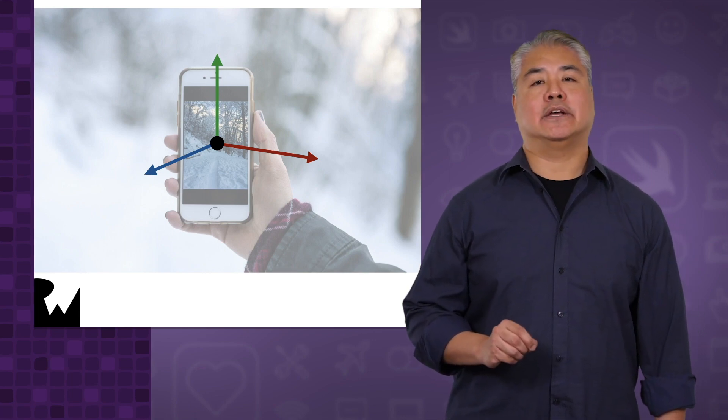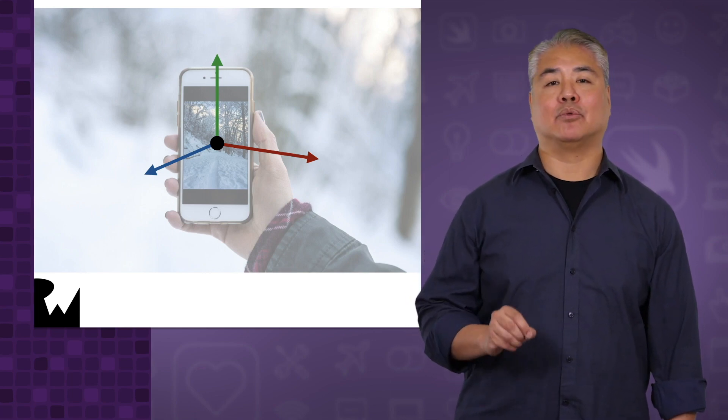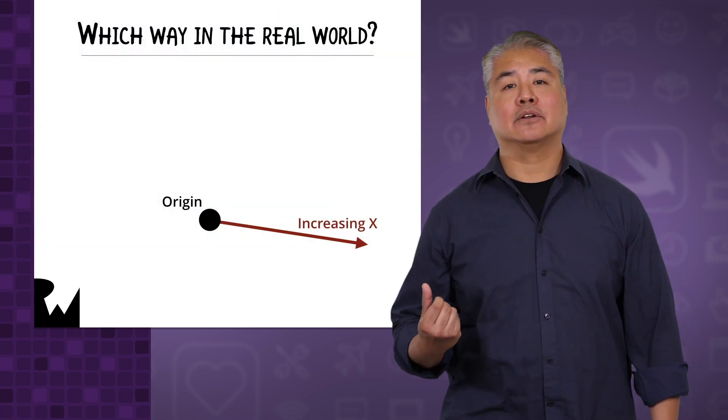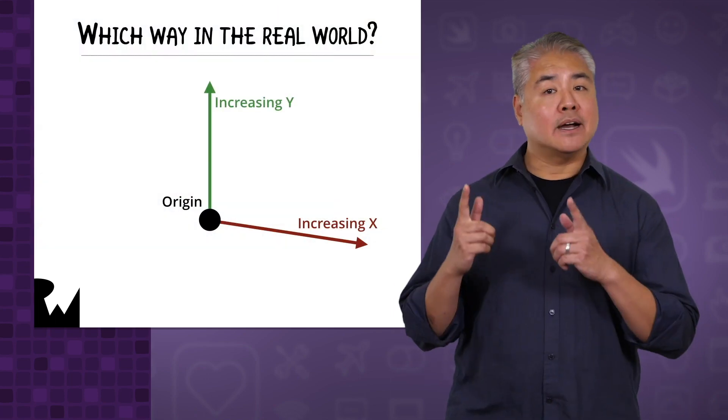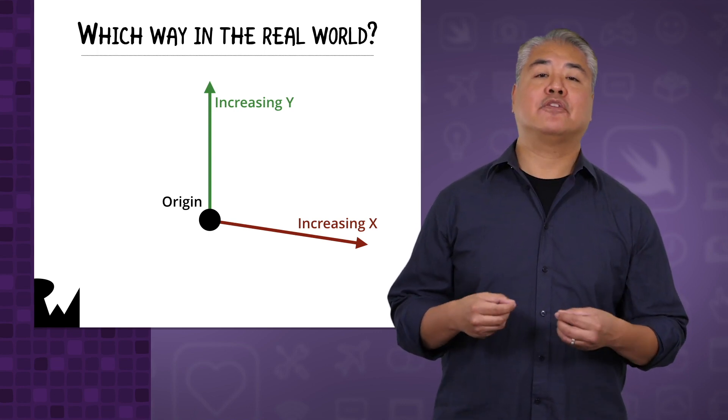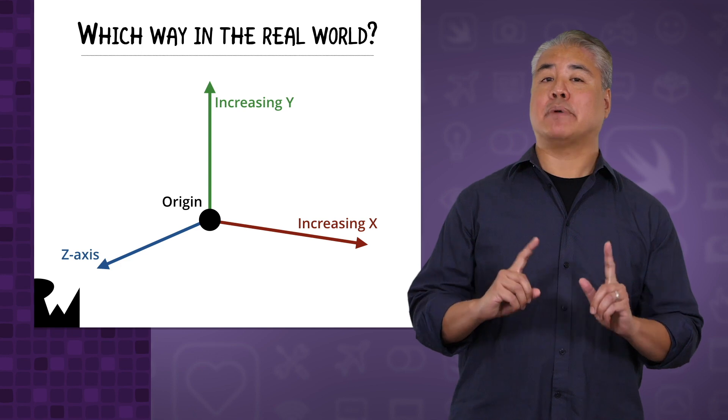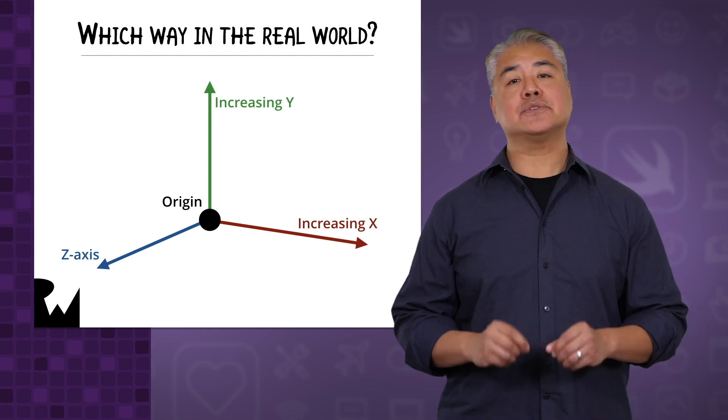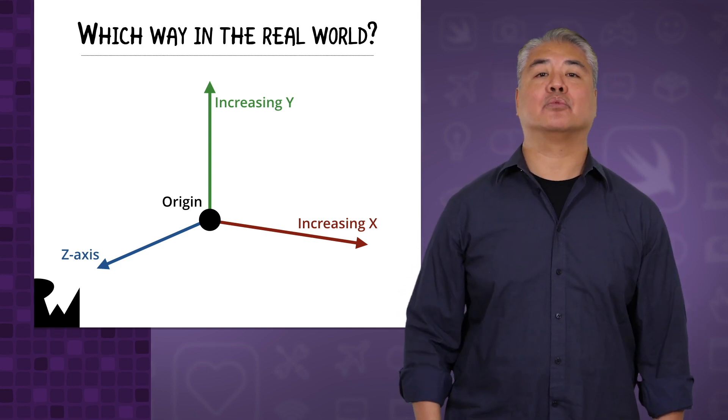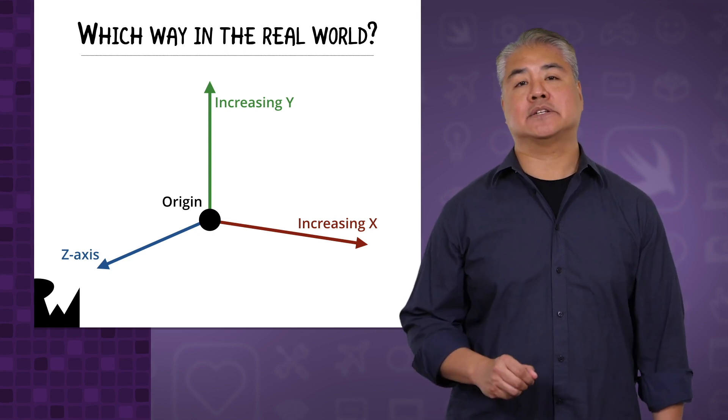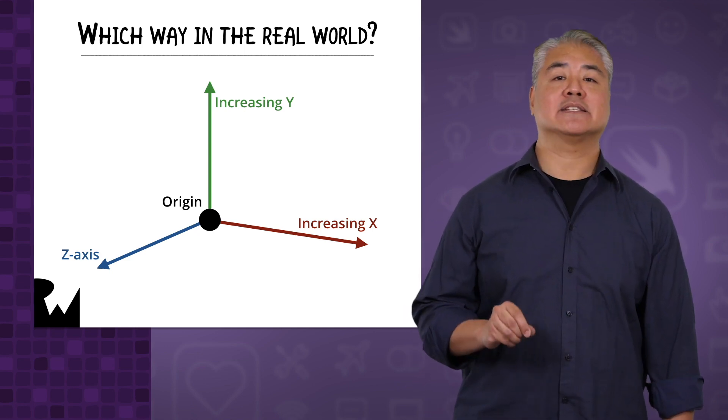Now that you know where the ARKit origin is, you're probably wondering: where's the X axis or which way is left or right? Where's the Y axis or what counts as up and down? And finally, what about the Z axis? How do we know what's forwards and backwards? The answers to these questions all depend on which way the X, Y, and Z axes point, and that's determined by the alignment setting.